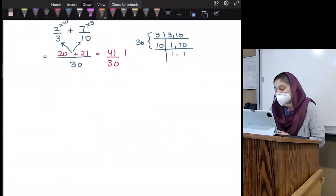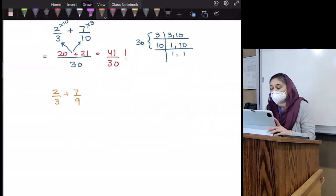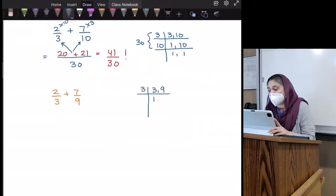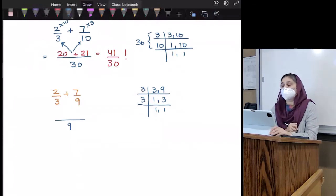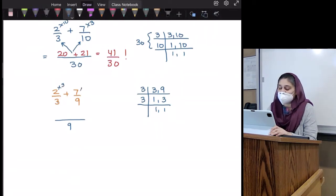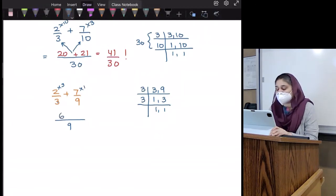Now, what if my question said 2 over 3 plus 7 over 9? Now, what is going to be the least common multiple between the 3 and the 9? 3, 1 times 3, 3, 1, 1. So the least common multiple between these two numbers and the denominator is 9. Times this by 3. Because 3 times 3 is 9. And times this by 1. That will give me 6 plus 7, which is 13 over 9.